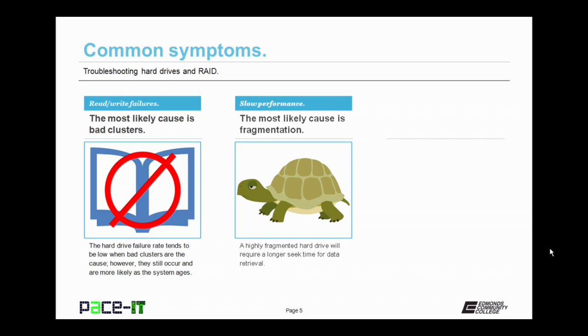Slow performance of a hard drive or RAID array is another symptom that you will more than likely come across. The most likely cause is fragmentation. The more fragmented a drive is, the more seek time is required to retrieve the requested files and/or data.